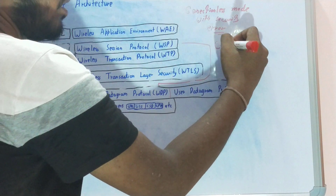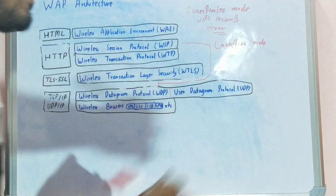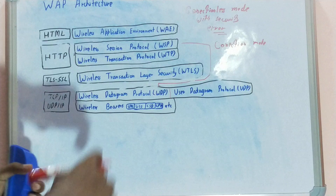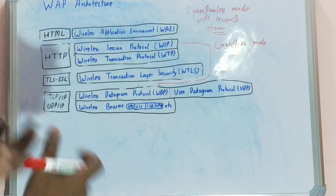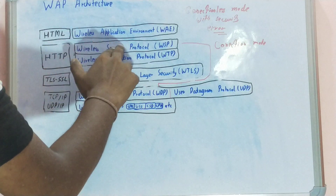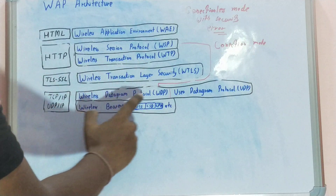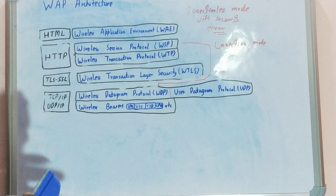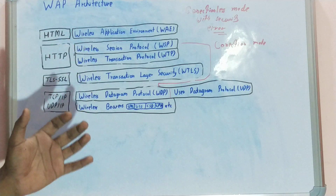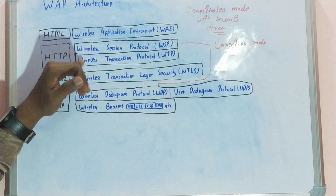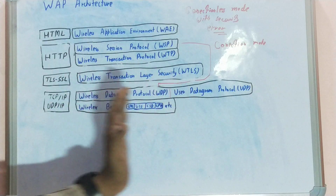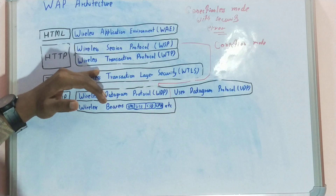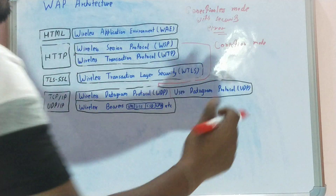The third mode is connection mode. This is a better mode because it includes Wireless Transaction Protocol. In this mode, we have Wireless Session Protocol and Wireless Transaction Protocol, and we use Wireless Datagram Protocol. We don't use Wireless Transaction Layer Security, meaning we don't encrypt or decrypt data. However, if there are any lost packets, we can use Wireless Transaction Protocol so those packets can be re-sent to the receiver. The only thing missing here is the encryption and decryption of data.